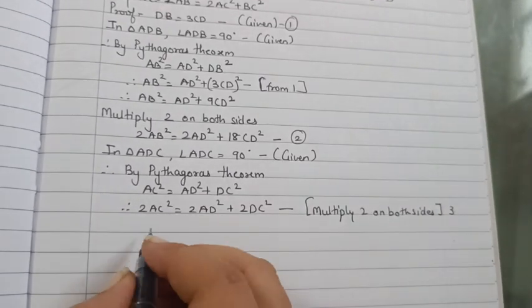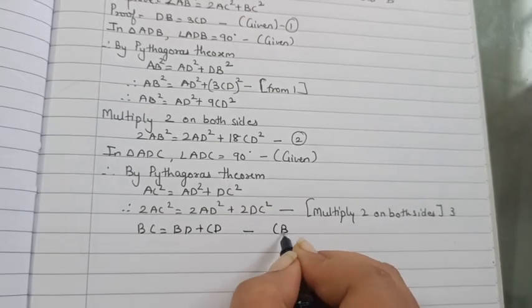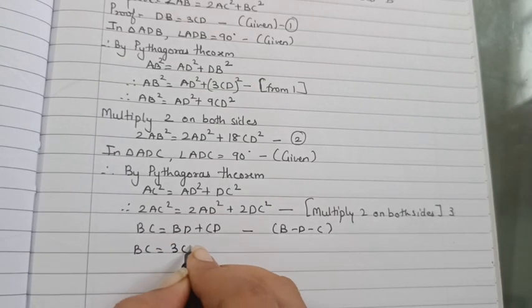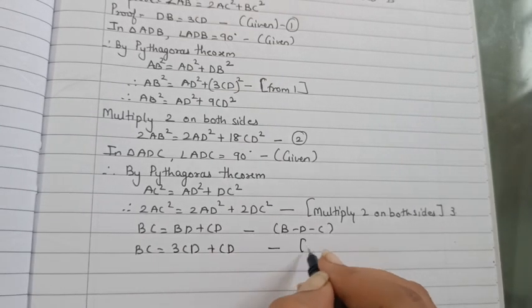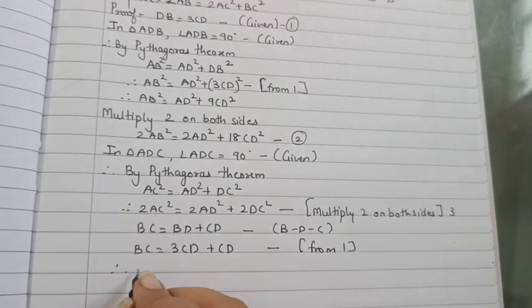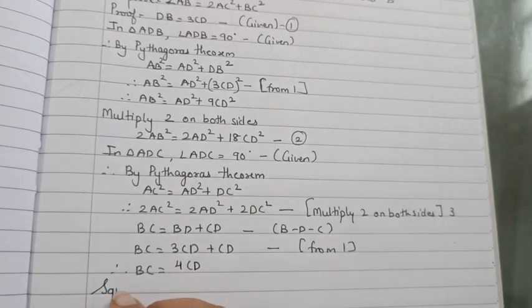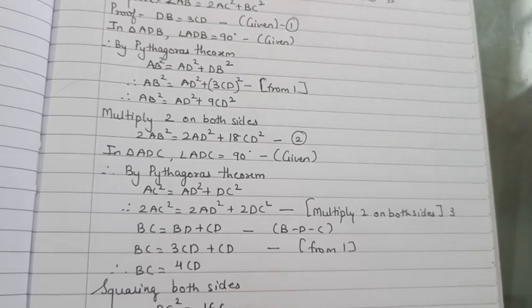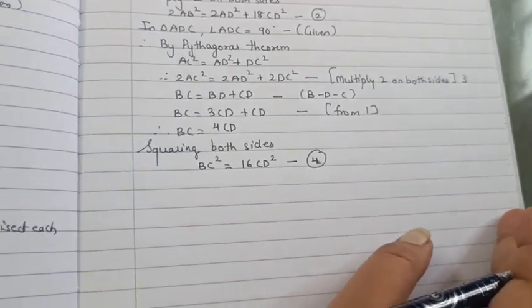Now BC is equal to BD plus CD, why? Because they are collinear points, they are in same line. So BC equal 3CD plus CD, that is 4CD. Here reason from equation 1. Therefore BC equal 4CD. Now what you have to do, you have to square it. Squaring both sides, BC² equal 16CD². Mark this as equation 4.